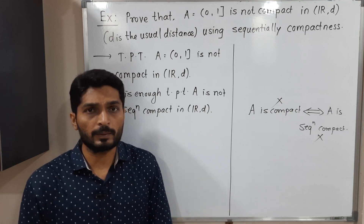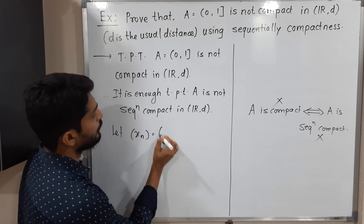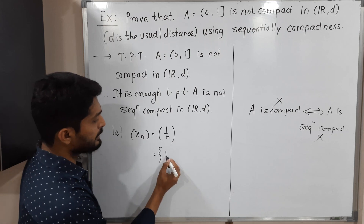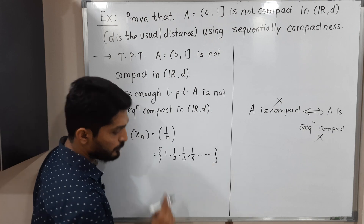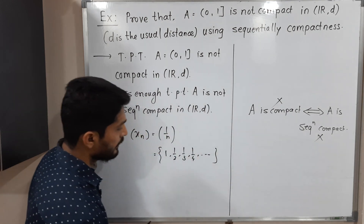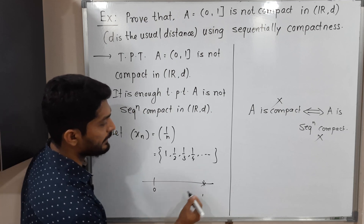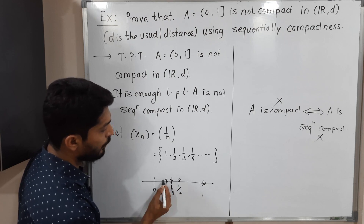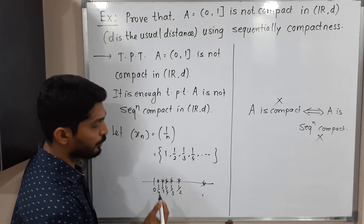Let us find such a sequence. We take Xₙ = 1/n — our favorite sequence. The first term is 1, second is 1/2, third is 1/3, then 1/4, and so on. Let me draw a simple diagram: on the interval from 0 to 1, the first term is 1, the second is 1/2, third is 1/3, 1/4, 1/5, and 1/10 somewhere near 0.